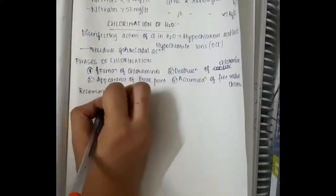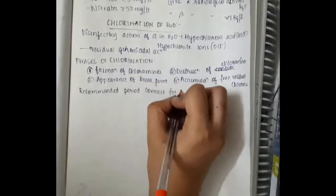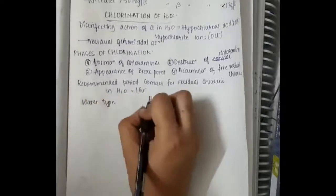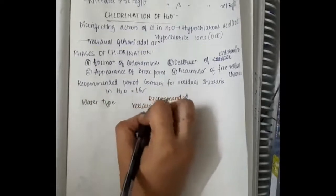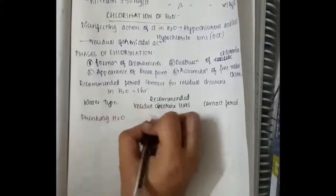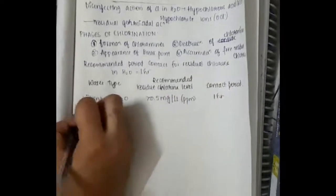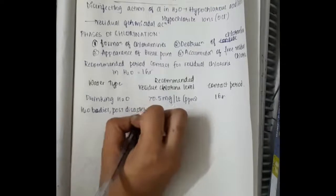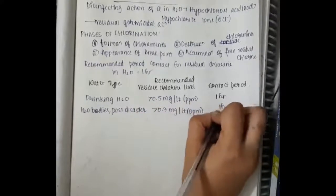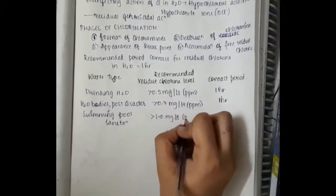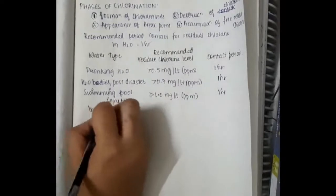The recommended period of contact for residual chlorine in water is around 1 hour. The recommended contact period and residual chlorine level depends upon the type of water. Drinking water requires more than 0.5 mg per litre of residual chlorine for a contact period of 1 hour. Water bodies post-disaster require more than 0.7 mg per litre of chlorine for a contact period of 1 hour. Swimming pool sanitation requires more than 1 mg per litre of chlorine for a contact period of 1 hour.